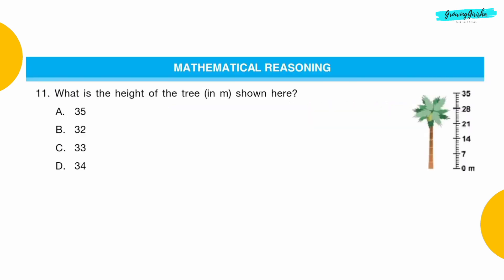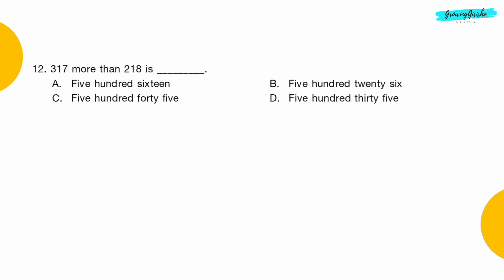Mathematical Reasoning Question 11: What is the height of the tree in meters shown here? Option D: 34 meters.